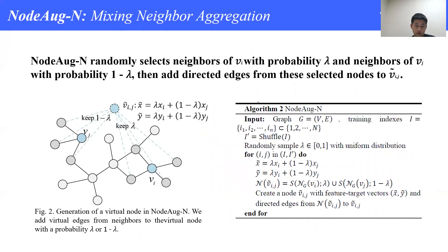Now we introduce NodeAug-N. As shown in figure 2, the feature of vij is the same as NodeAug-I. The difference is that vij is not isolated now. We take lambda neighbors of vi and 1 minus lambda neighbors of vj as neighbors of vij, as demonstrated in figure 2. Details can be found in the pseudocode on the right.